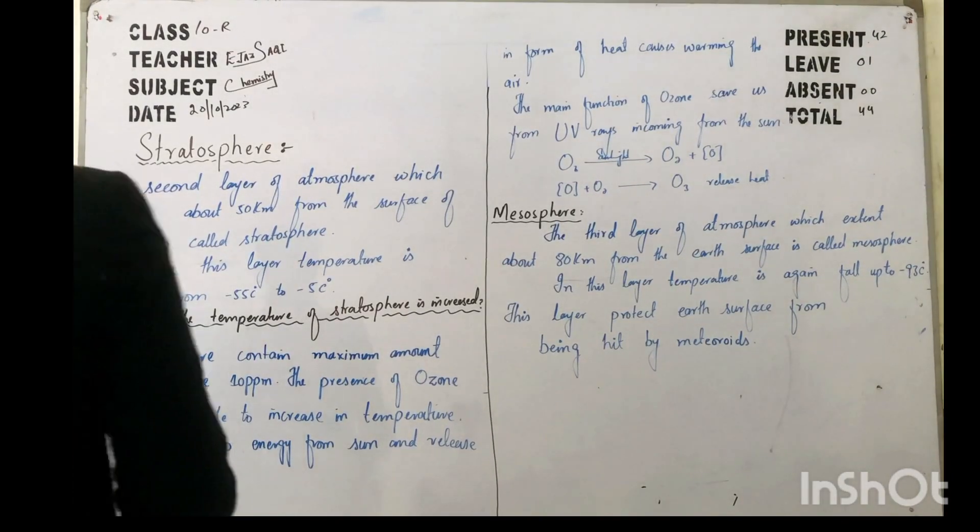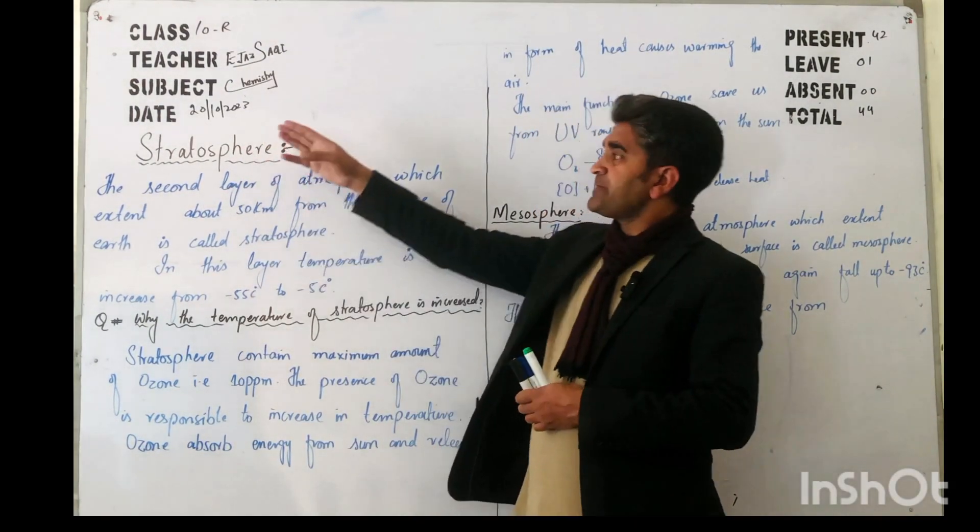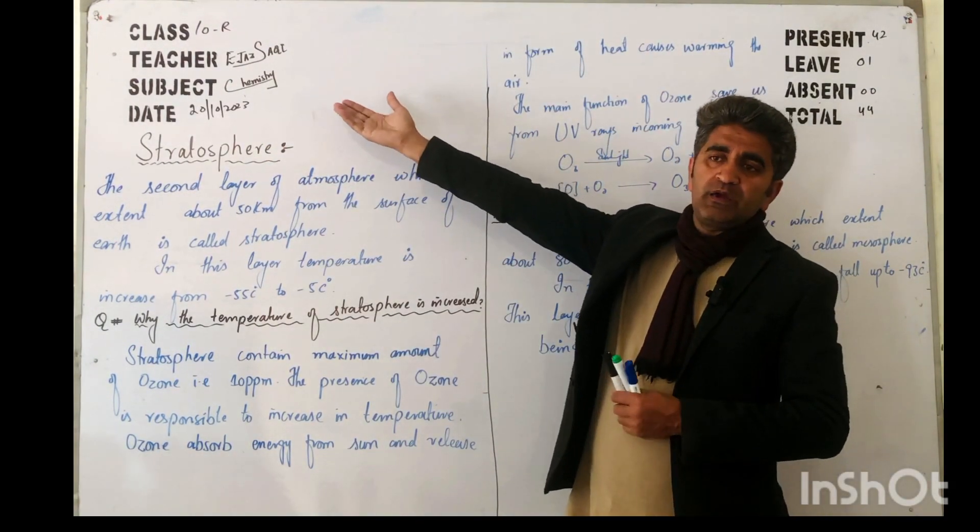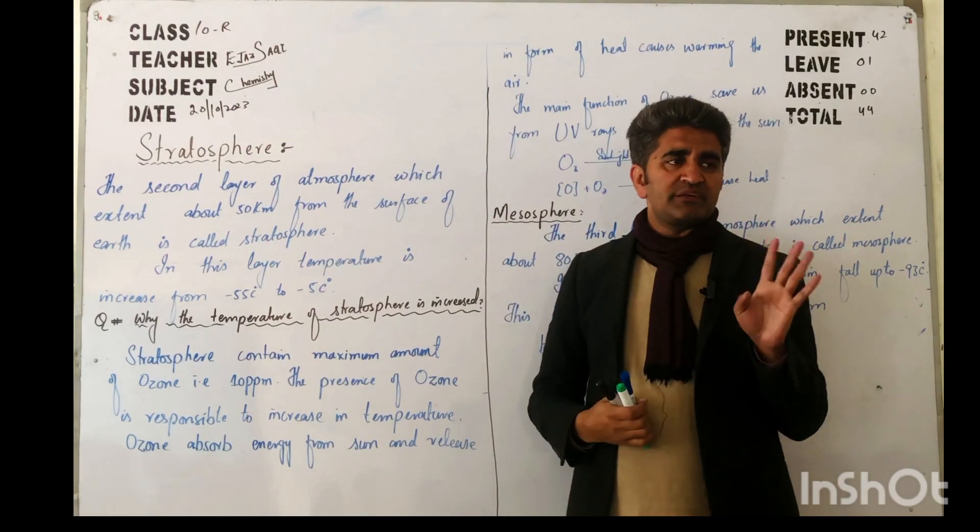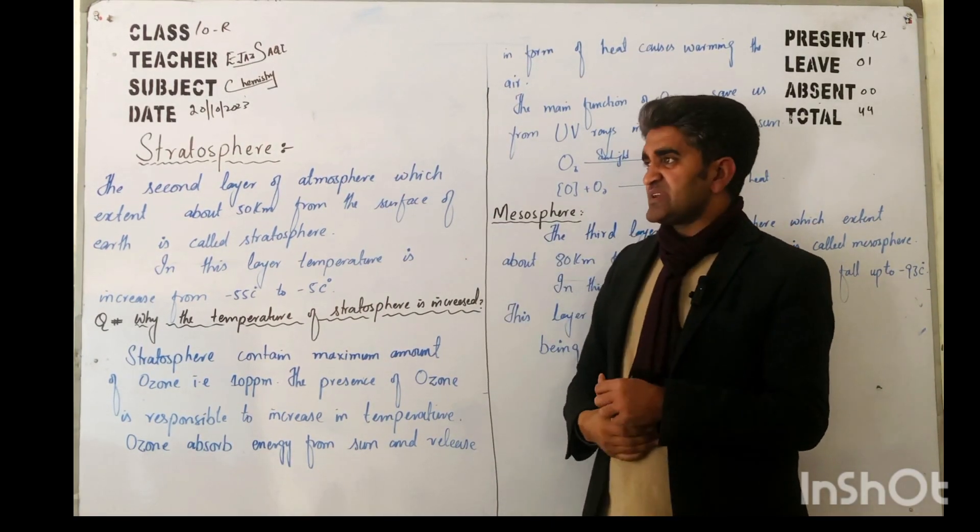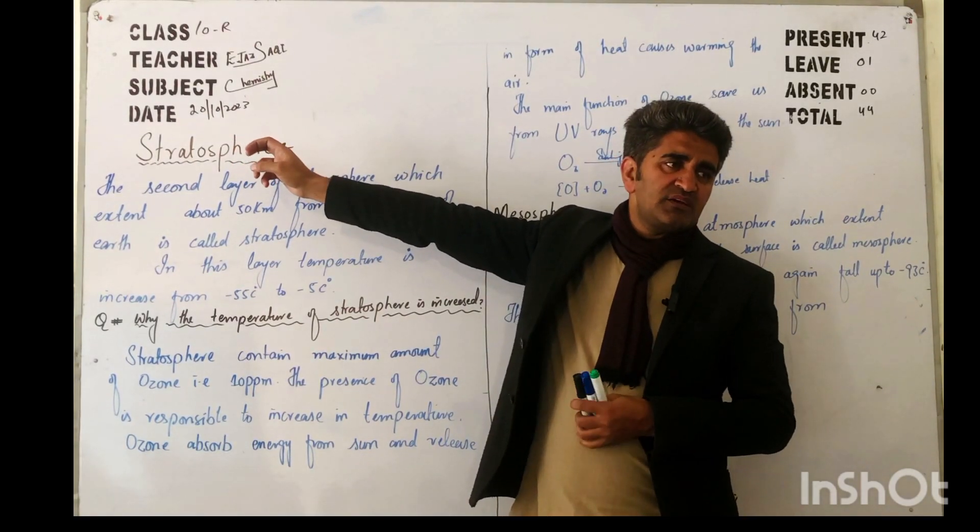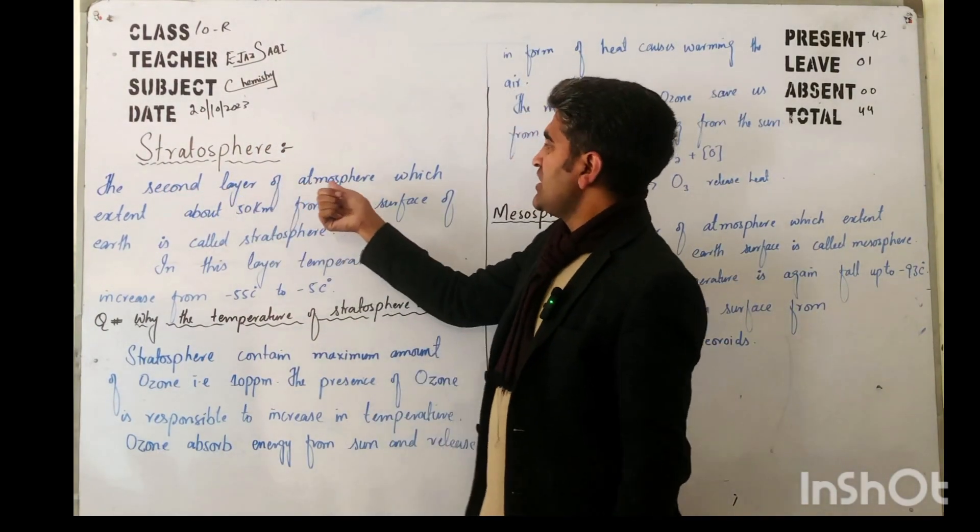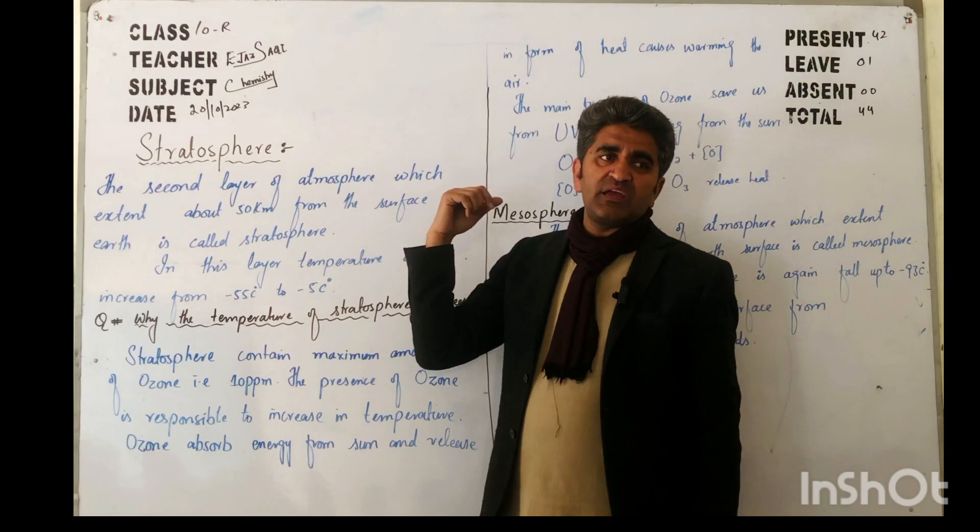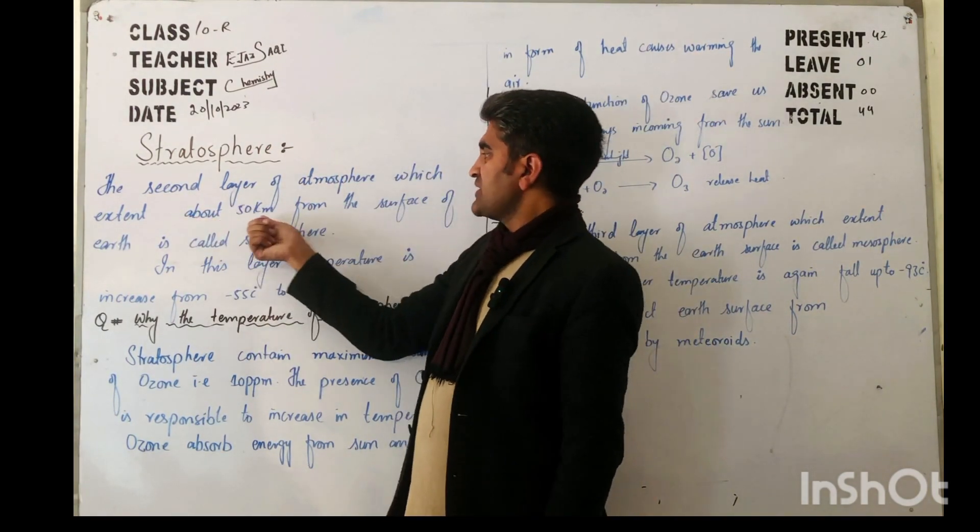Our atmosphere is divided into four layers. Today we discuss about the stratosphere. It appeared the second layer of atmosphere. Atmosphere second layer which is action about fifty kilometers.